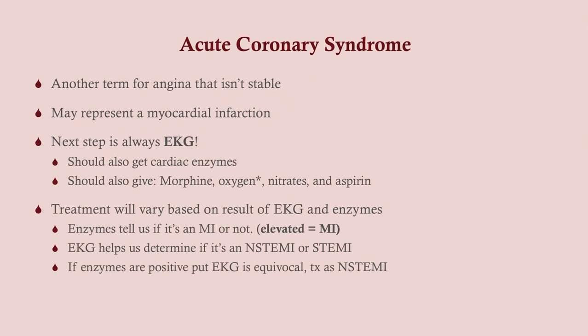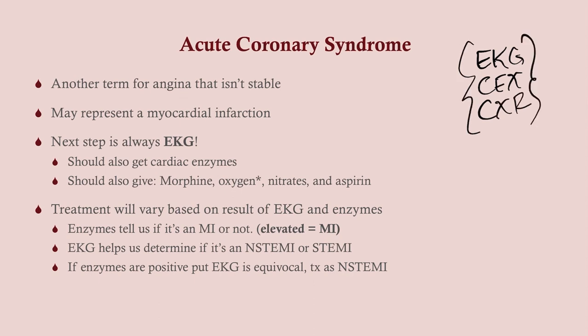Our next step is an EKG. Three things you always need to do in someone with chest pain: EKG, cardiac enzymes, and chest X-ray — always, regardless of age or risk factors. They're cheap, they're easy, and you will not miss a heart attack. The EKG tells you right away if the person is having a STEMI. If not, you have to wait for the enzymes to find out whether they're having a heart attack.